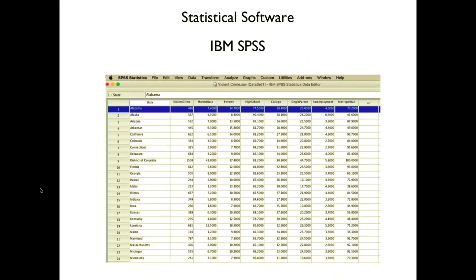IBM SPSS is what they call vertical software — software with a specific purpose. Excel is used for many things: finance, engineering, health sciences, statistics. IBM SPSS has a single purpose: statistical analysis. Although the layout looks similar to Excel, there are big differences we'll explore. It's largely menu-driven from our perspective, so it's relatively easy to learn, and I think you're going to wind up enjoying using it — it's really pretty intuitive.